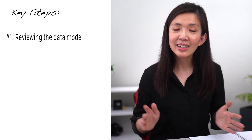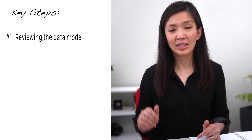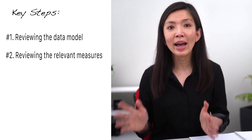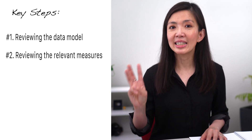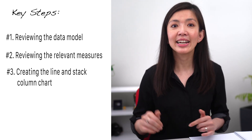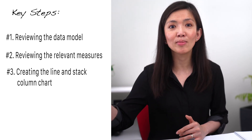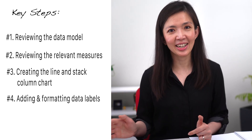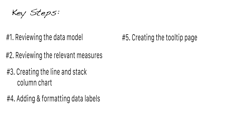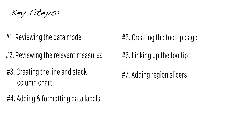Step 1: reviewing the data model. Step 2: reviewing the relevant measures, actuals and plan. Step 3: creating the line and stacked column chart. Step 4: adding and formatting data labels. Step 5: creating the tooltip page. Step 6: linking up the tooltip. Step 7: adding region slicers. Step 8: sense checking.